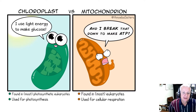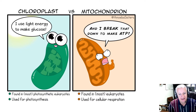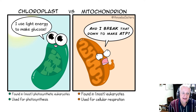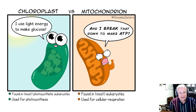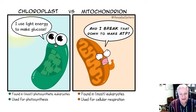Respiration occurs in organelles called mitochondria — mitochondrion in singular, mitochondria in plural. This diagram contrasts the organelles of chloroplasts and mitochondria. The chloroplast is the organelle in which photosynthesis occurs, while mitochondria are the organelles in which respiration occurs.